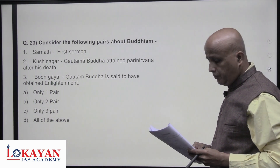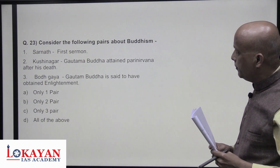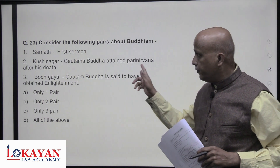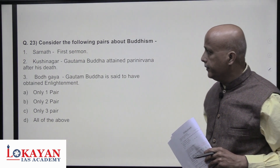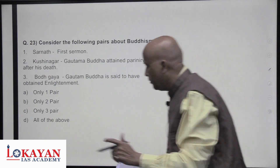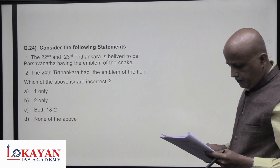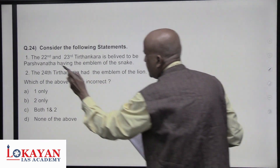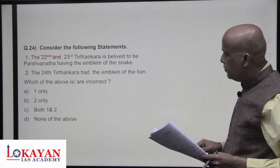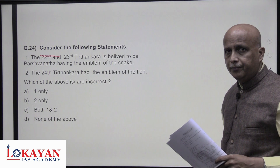Consider the following pairs about Buddhism. Bodhi Tree — Mahabodhi (enlightenment): correct. Horse Kanthaka — the great renunciation: correct. Lotus and Bull — symbol of birth: correct. Regarding Jain Tirthankaras: the 22nd Tirthankara had the emblem of a snake — correct. The 23rd Tirthankara Parshvanatha has a counter symbol. The 24th Tirthankara, Mahaveer, has a lion as his symbol — both one and two are correct.